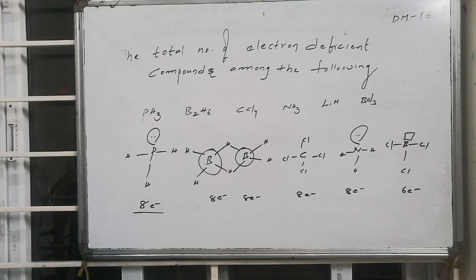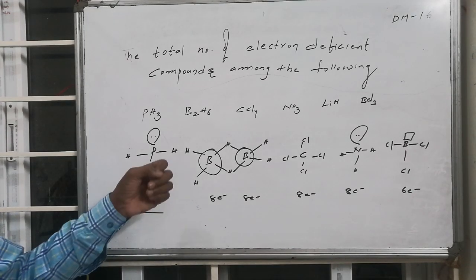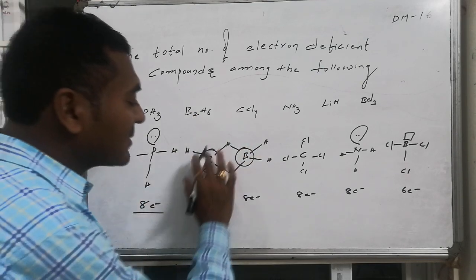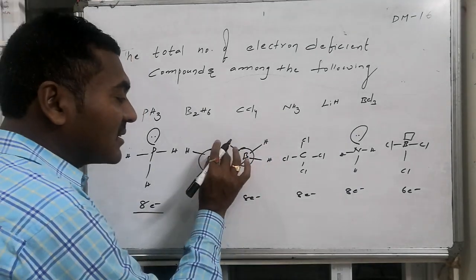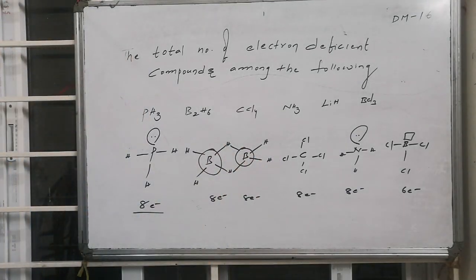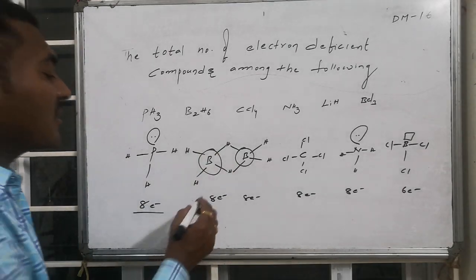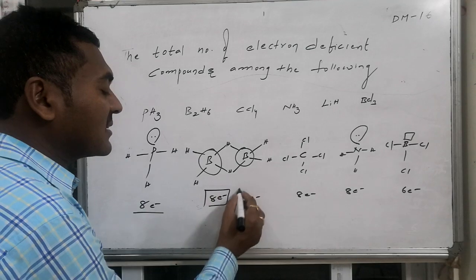So the total number of electron deficient compounds - if you look at phosphine followed by diborane, CCl4, ammonia, and boron trichloride - in case of diborane what we have to consider is it is a three-centered two-electron bond. As it is a three-centered two-electron bond, though officially it appears as eight electrons...